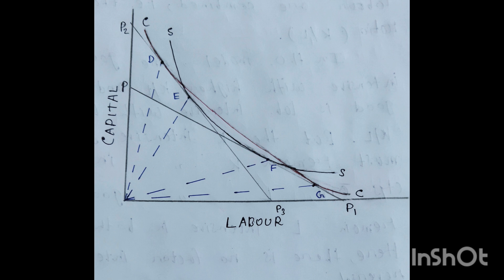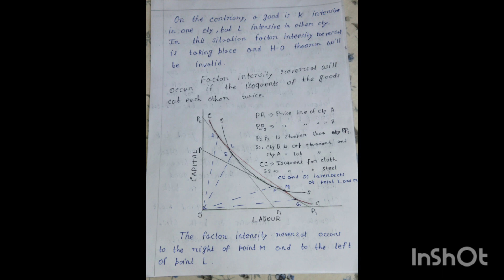Since P2P3 is much steeper and more erect toward the Y-axis representing capital, country B is a capital abundant nation and country A is a labor abundant nation. Now, the key point to remember: factor intensity reversal will occur if the isoquants of the two goods cut each other twice.